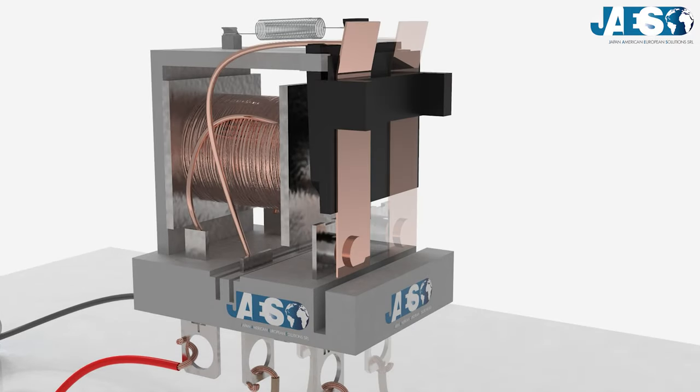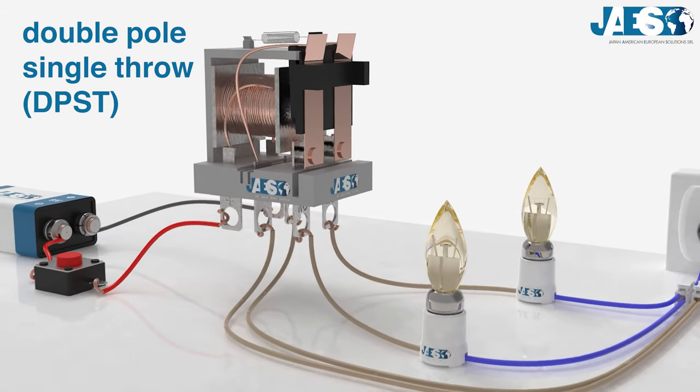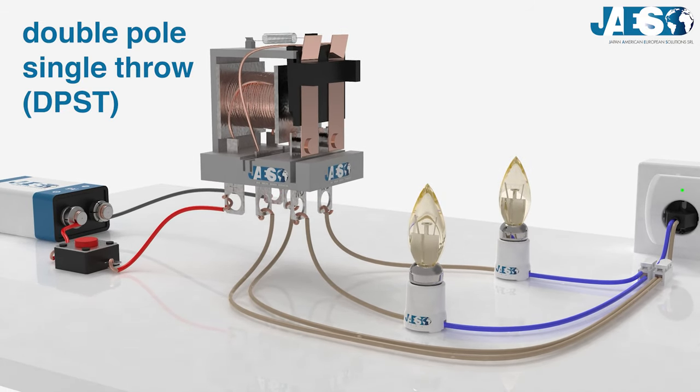There is another version called Double-Pole Single-Throw. It is a type of relay that is equivalent to a Single-Pole Single-Contact controlled by a single electromagnet, which can also be made in the Normally Open or Normally Closed variants.